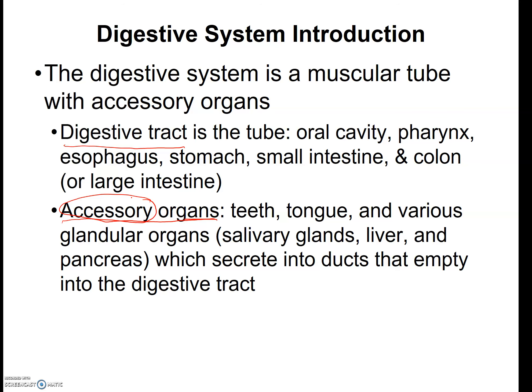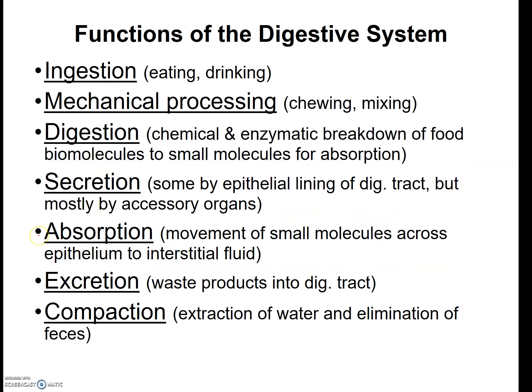All these accessory organs work together to secrete compounds into the digestive tract. The teeth don't secrete anything, but they do help break food down into smaller pieces. The functions of the digestive system start with ingestion, or bringing food or liquid into your digestive tract. Then we have mechanical processing, which includes chewing and mixing the food.